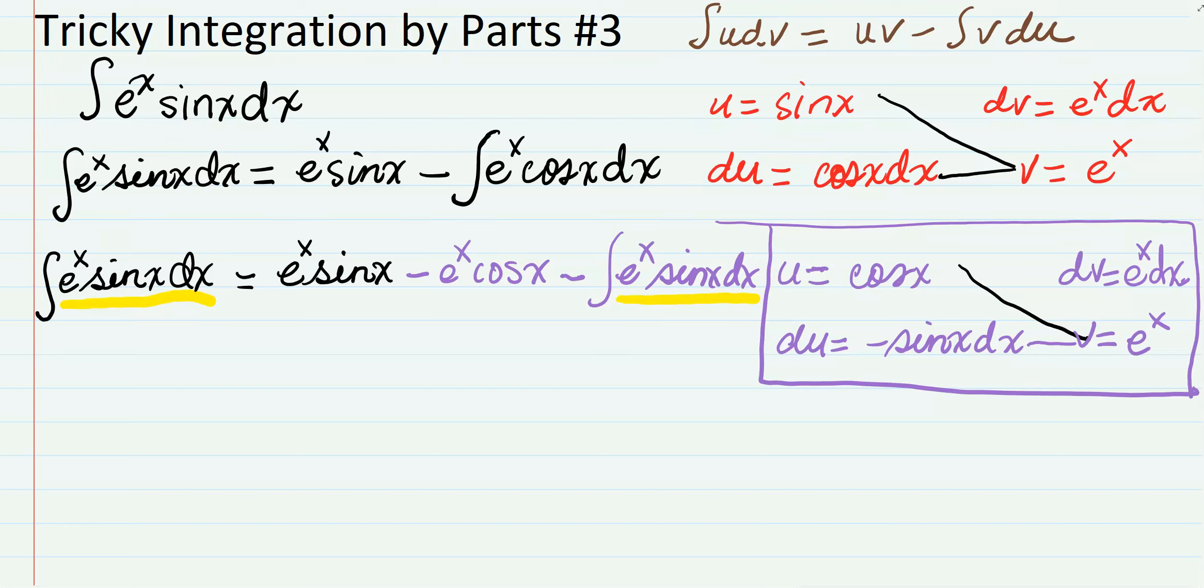And good thing this is a negative, because we can now add it to both sides. When we add it to both sides we have 2 integral of e to the x sin(x) dx is going to equal what's left there.